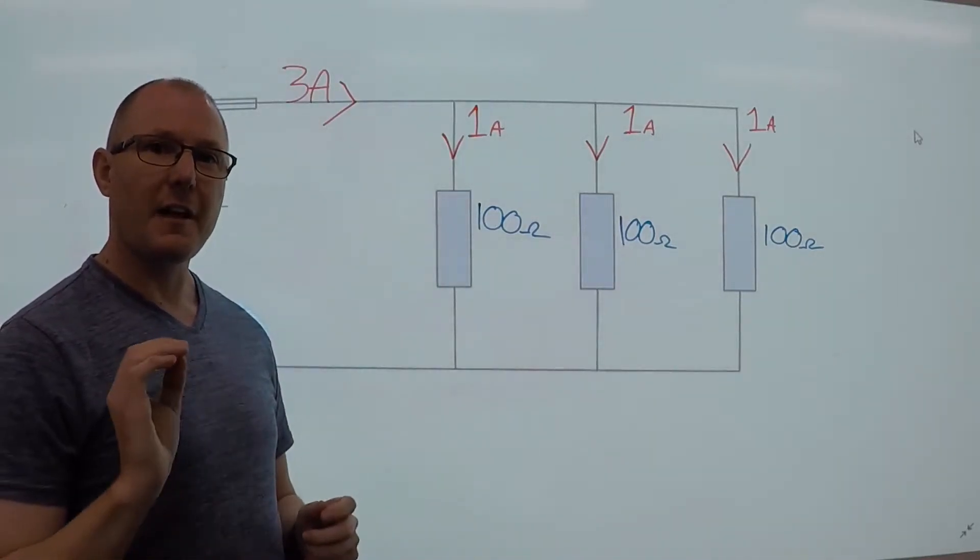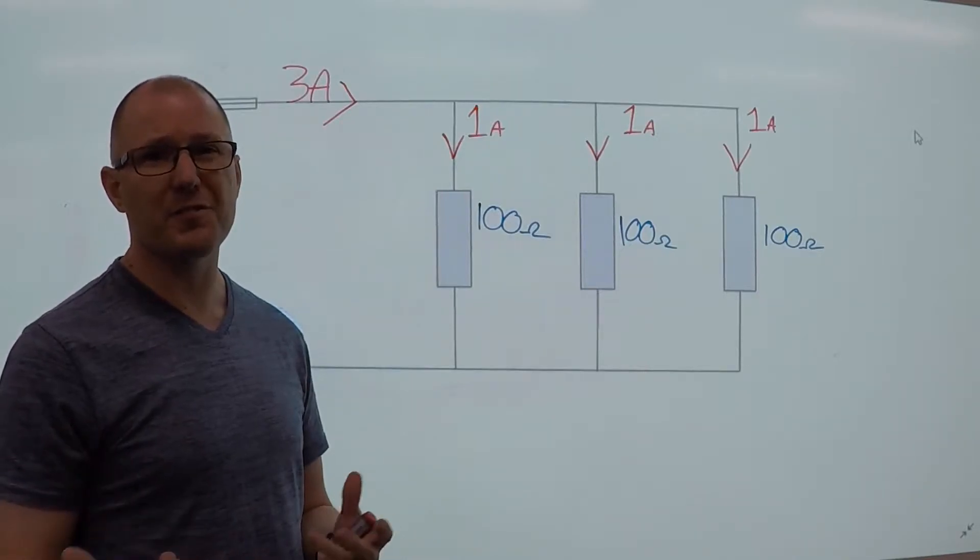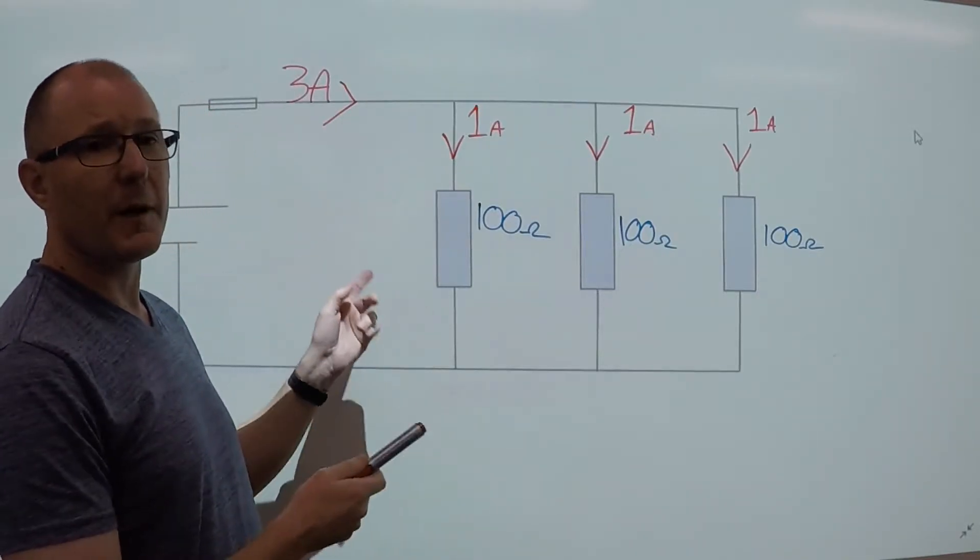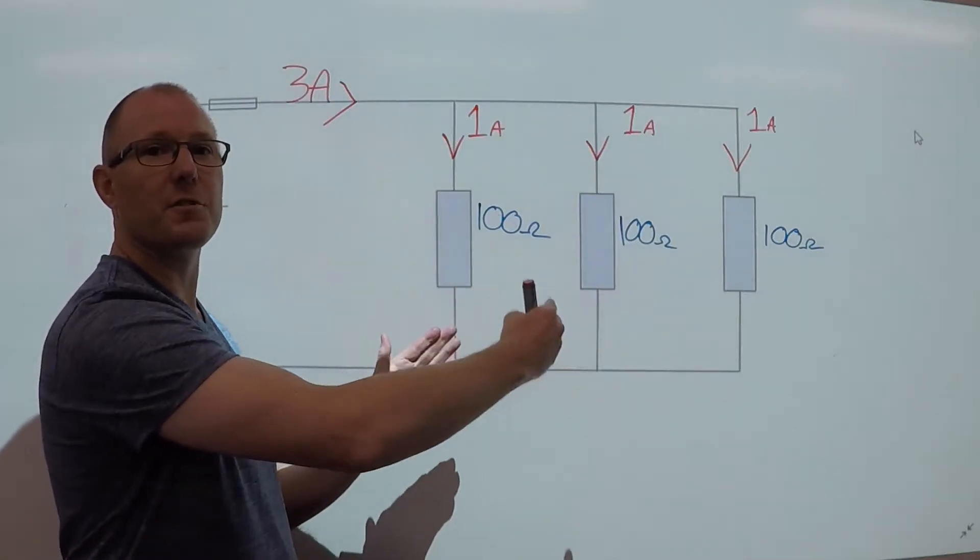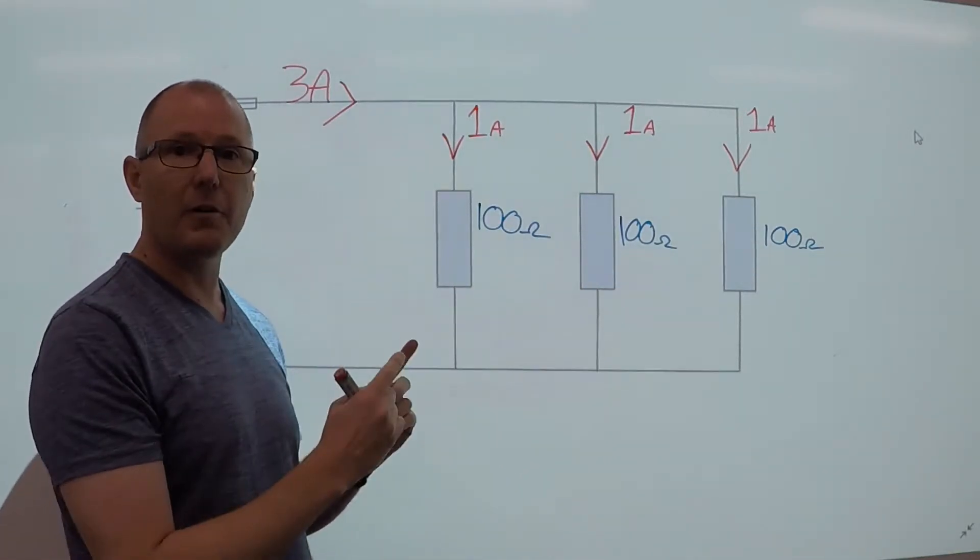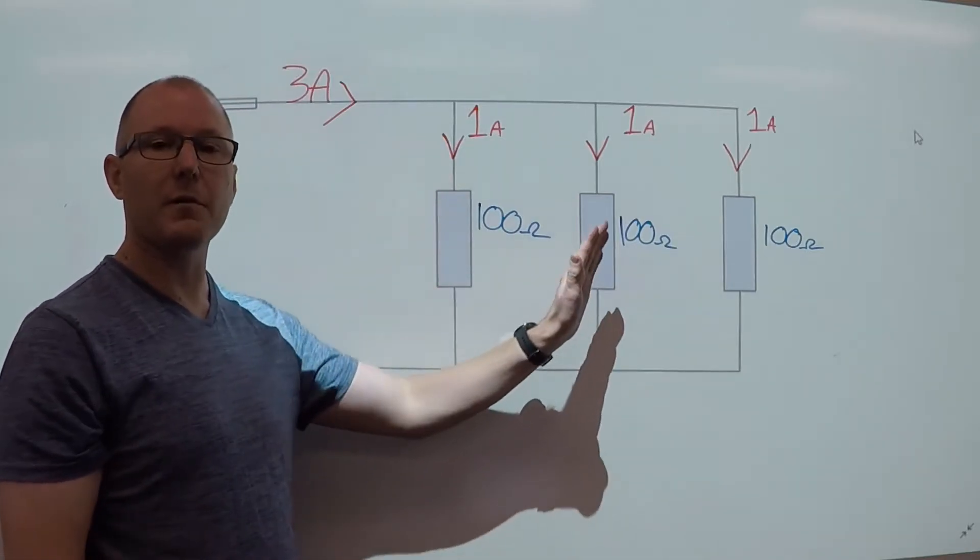Now in parallel circuits, the current changes depending on how many paths and depending on the resistance of the circuit. So if we have a look at this circuit where we've got 3 amps and we have equal resistance in each path, the current will separate equally, so you'll have 1 amp in each path.